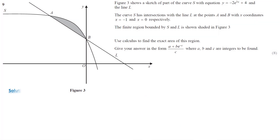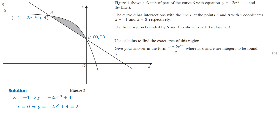In this question, we need to find the exact area of the shaded region between the curve and the straight line. First, we find the y-coordinates of points A and B. To find the y-coordinate of point A, substitute x equals negative 1 into the curve equation, giving y equals negative 2e to the negative 3 plus 4. To find the y-coordinate of point B, substitute x equals 0, giving y equals negative 2e to the 0 plus 4. Since e to the 0 is 1, y equals 2. So the coordinates of B are (0, 2). The area under the curve from x equals negative 1 to x equals 0 is found by integrating the curve function.